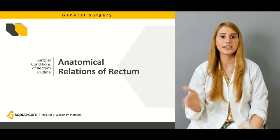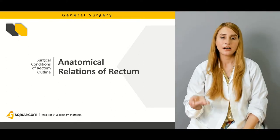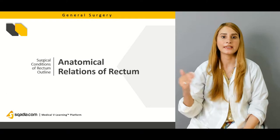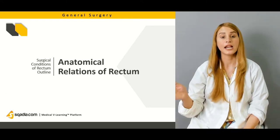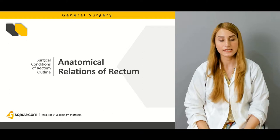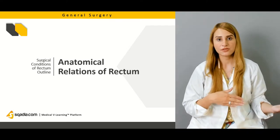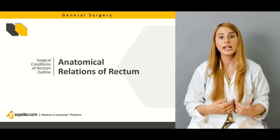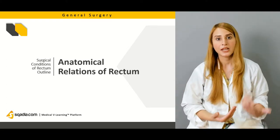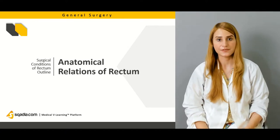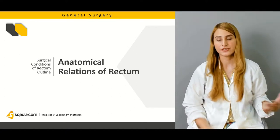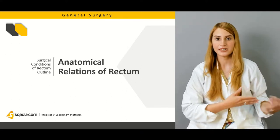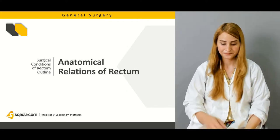Posteriorly, the structures differ as well. In females, the anterior structures include the uterus and the pouch of Douglas. In males, they are the prostate and seminal vesicles. Laterally, you have the obturator internus muscle, levator ani muscle, fascia, and supporting structures. Posteriorly, the sacrum and coccyx lie behind the rectum.